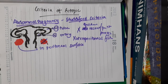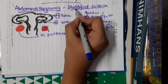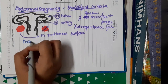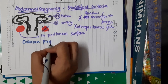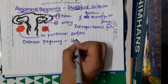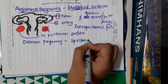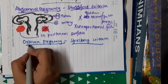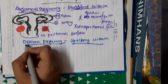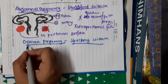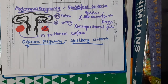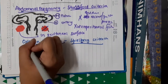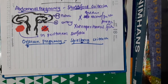After abdominal pregnancy, we have ovarian pregnancy. For ovarian pregnancy we have Spiegelberg criteria. You can remember: 'D' for abdominal — Studdiford. For ovarian, in Bengali the word is sometimes pronounced with a 'B' sound, so you can associate it with Spiegelberg.